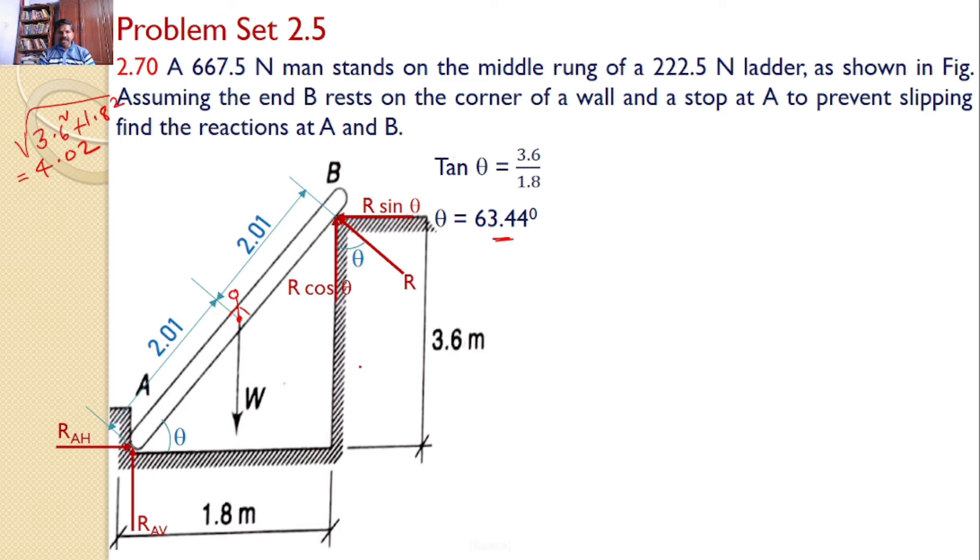Let us apply the equilibrium equations. Sigma Fx equals 0. There are only two forces acting along the x-axis, hence RAH equals R sin theta. This is equation 1. Sigma Fy equals 0. There are three forces acting along the y-axis, hence RAV plus R cos theta equals the weight of the man plus weight of the ladder, which equals 890. RAV plus R cos theta equals 890. This is equation 2.